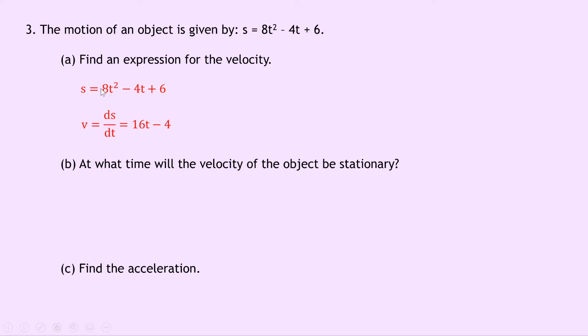So just doing the same as before, bringing this power down multiplying it by 8t so we get 16t minus the 4 because that expression is t to the power of 1 and the plus 6 is a constant so we can ignore that one. So we get v equals 16t minus 4.